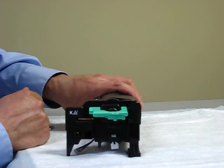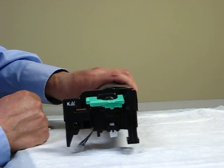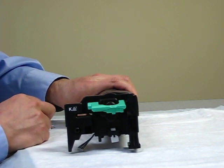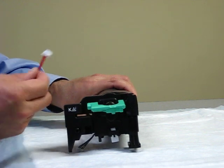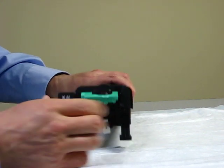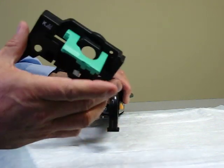We're going to convert this Ricoh MPC 3300 black drum unit to a color drum unit by installing this connector. First we remove this front cover. It requires two screws.